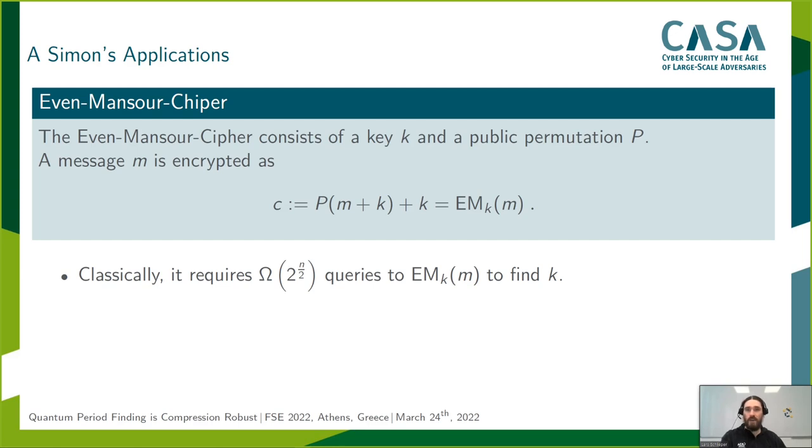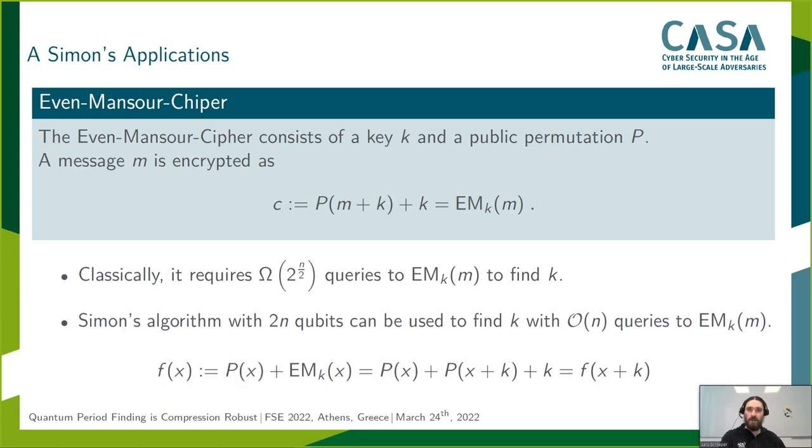Using Simon's algorithm with quantum access to the cipher, the key can be recovered in polynomial time. For this, a function f is defined as f(x) = E(x) ⊕ π(x). It is easy to see that the secret key is a period of f, and so that the secret key can efficiently be found via Simon's algorithm.